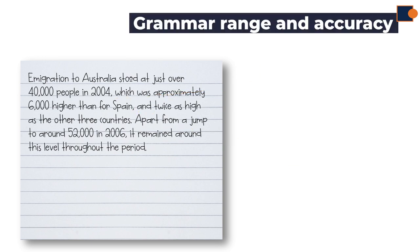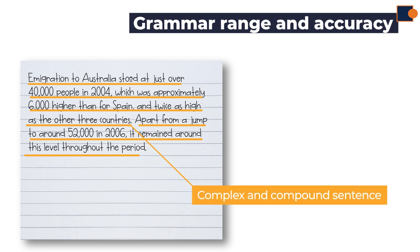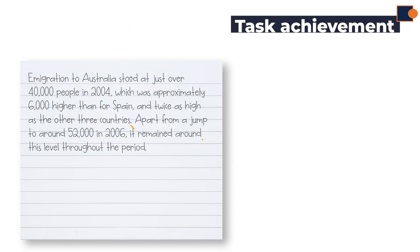When it comes to grammar range and accuracy, you must use a combination of simple, complex, and compound sentences. In the sample we can see that there are complex and compound sentences used to explain the chart. If we look at the next paragraph, in terms of task achievement again, comparison is given but this time about Spain.